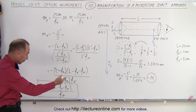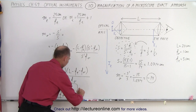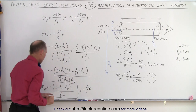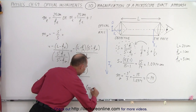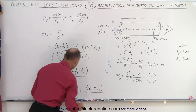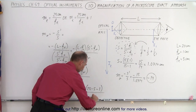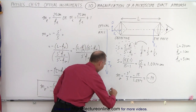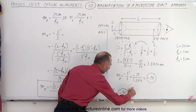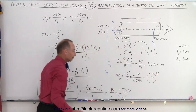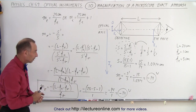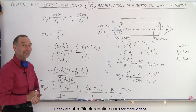Let's verify by plugging in our values. The magnification equals minus (20 minus 5 minus 1) divided by 1, which is minus 14 over 1, equal to minus 14. We get exactly the same value using the general equation as we did when we calculated the magnification using the lens equation directly. And that is how it's done.